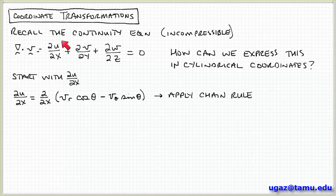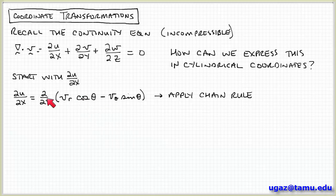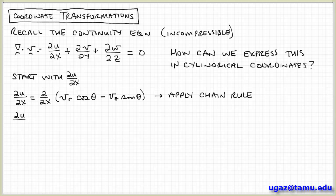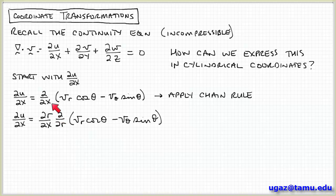Let's start with the first component: the partial derivative of u with respect to x. We obtained an expression for the velocity component u in terms of vr and vθ: u = vr cosθ − vθ sinθ. We want to take the partial derivative with respect to x of this quantity. When you take a derivative of a function involving products, we apply the chain rule. We can express this derivative with respect to x as the partial derivative of r with respect to x times the partial derivative with respect to r of (vr cosθ − vθ sinθ)...